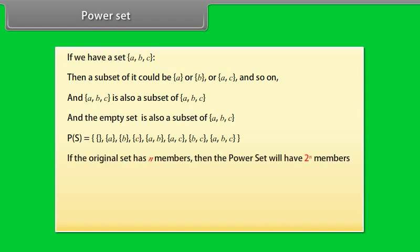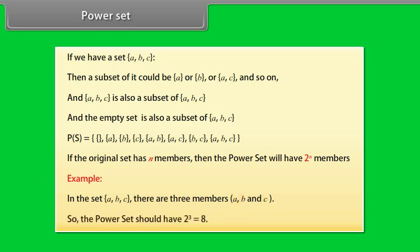If the original set has N members, then the power set will have 2 raised to power N members. Example: In the set A, B, C, there are three members A, B, and C. So, the power set should have 2 raised to power 3 equals 8, which it does.